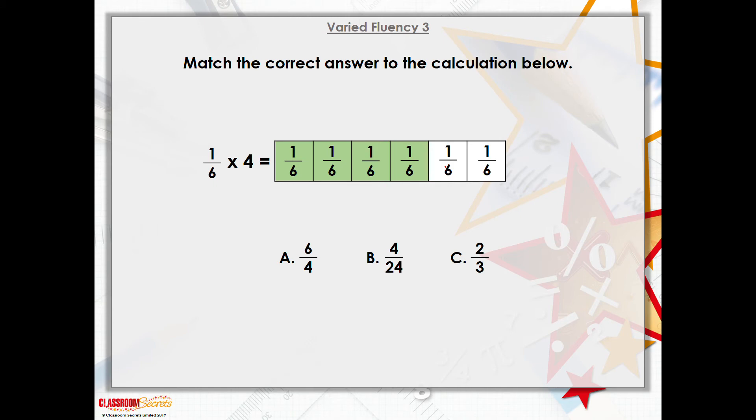It says here, match the correct answer to the calculation below. 1/6 times by 4 equals. So I apply my knowledge. I'm going to write it down just to help me out: 1/6 times by 4. That equals... So again, I'm applying my knowledge. I've got 1 times by 4 because I'm multiplying my whole number with my numerator. So 1 times by 4 is 4. Remember to keep your denominator the same. It's actually 4/6.